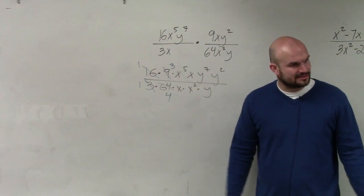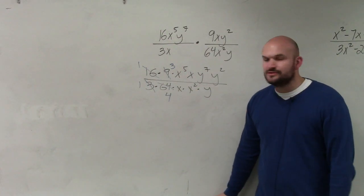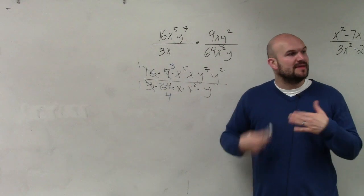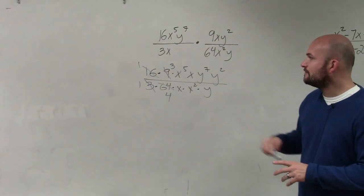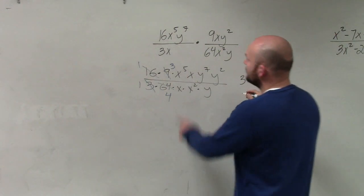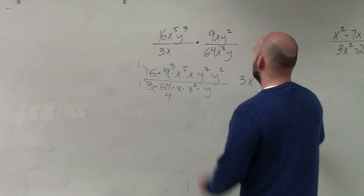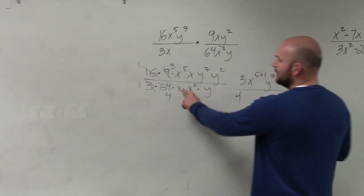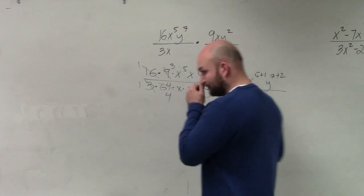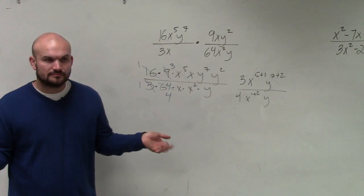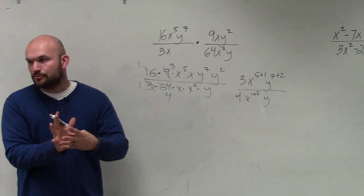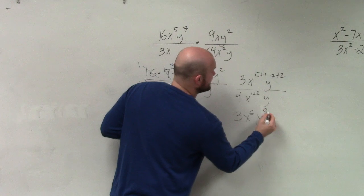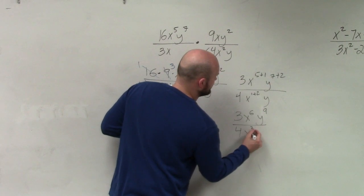Now it's much easier to multiply my numbers. What I would recommend is when multiplying, multiply all the way across so you have a rational expression that you can then simplify like we did in the last example. So here I have 1 times 3, which is just 3. Then I have x to the fifth times x, which is x to the 5 plus 1. Y to the 7 plus 2, so it would be y to the 9th. All over 1 times 4 is 4, x to the 1 plus 2, times y. So I'm combining the x's and the y's, giving a rational expression of 3x to the sixth, y to the ninth, all over 4x to the third, y.